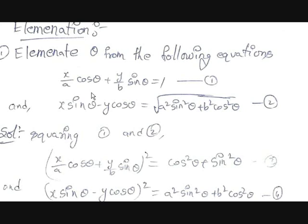Let us think about what we can do. If you observe carefully, in the first equation we have x·cosθ + y·sinθ — x is related with cosθ and y is multiplied with sinθ, with a plus in between. But in the second equation, there is a minus and x is multiplied with sinθ while y is multiplied with cosθ.